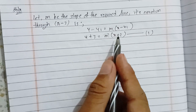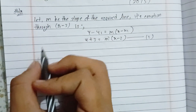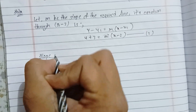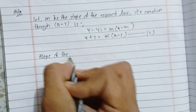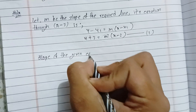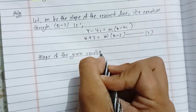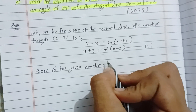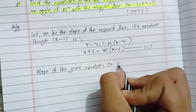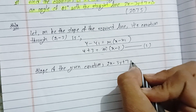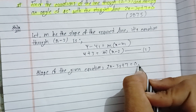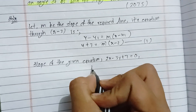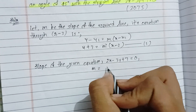Now to find the slope of the given line. The given equation is 2x minus 3y plus 7 equals to 0. Rearranging to find the slope gives us the slope m2 equals 2 by 3.